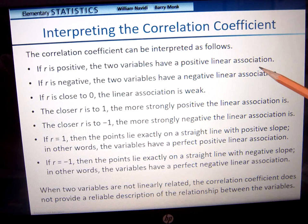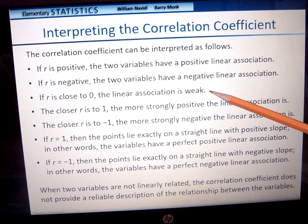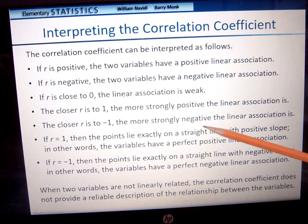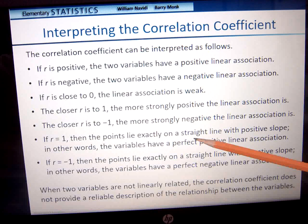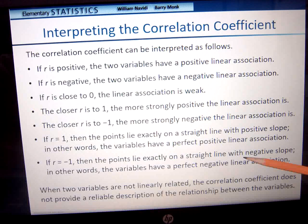Let's interpret this. If it is positive, the two variables have a positive linear association — ours was 0.9, so it was positive. If it's negative, it has a negative linear association — as you go from left to right, the line goes down. If it is close to 0, the linear association is weak. If it's closer to 1, it's a more strongly positive association — ours was 0.9, so it's pretty strong. If it's closer to negative 1, there's a strongly negative association. If it equals exactly 1, every single point is on the straight line — a perfect positive linear association. If it's negative 1, every single point is on the line with a negative slope — a perfect negative linear association.